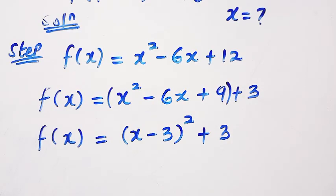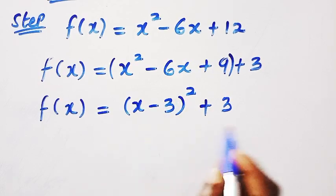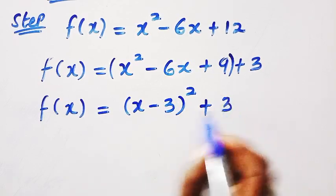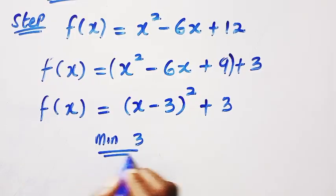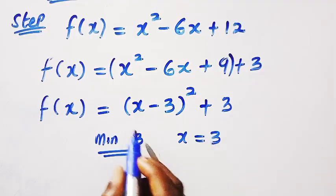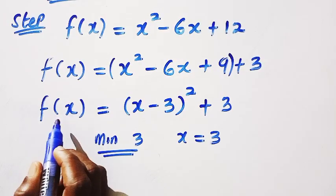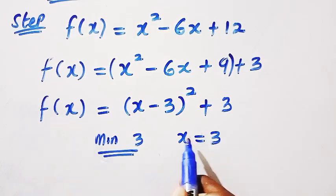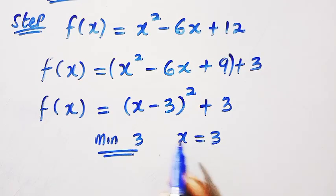So the second step we are going to take here, or before that, we know that from here, we have the minimum value here to be 3. So the minimum value is 3 at x equals 3. So it means any f of x we are going to get, the output here must not be less than 3 because of this minimum value.